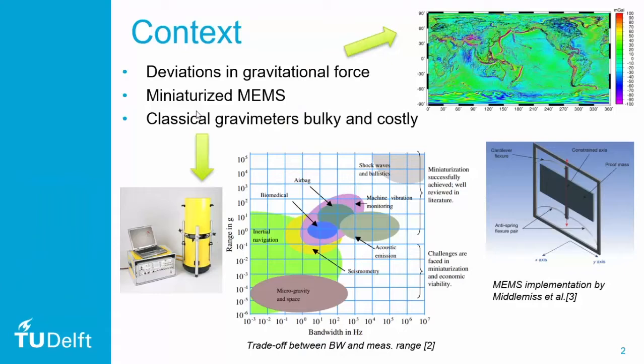One of the main applications is the measurement of deviations in the gravitational force of the Earth. As you may know, the gravitational force of the Earth has some anomalies around the world, which can be studied. Typically, classical gravimeters used for this are quite bulky and costly because they consist of falling masses. Quite recently there have been some MEMS implementations — a MEMS accelerometer instead of this bulky gravimeter — and one inspiration for this work was actually the design done by Littleness of this MEMS application.